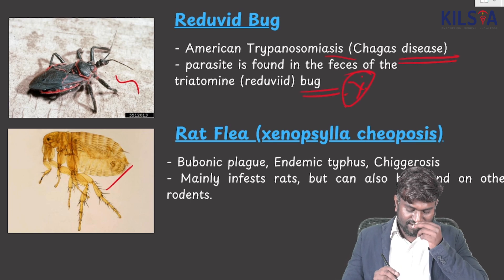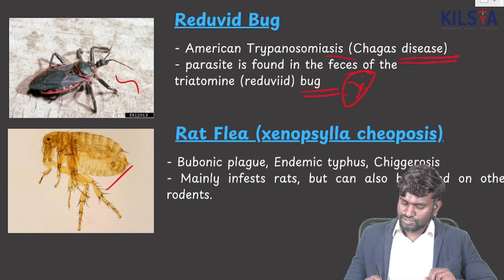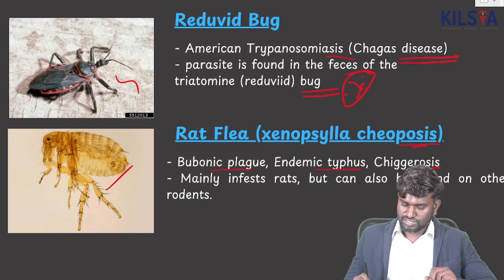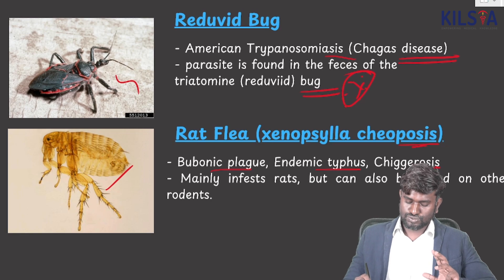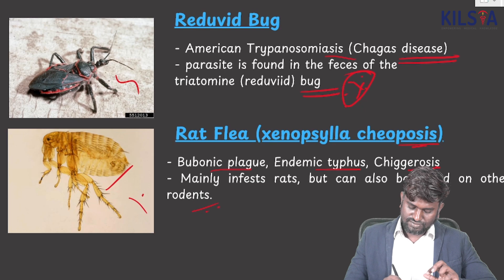This is going to be Rat Flea — which has been asked in the exam multiple times. It is called Xenopsylla cheopis. It causes Bubonic Plague, Endemic Typhus, and Hymenolepiasis. It mainly infests rats but can also be found in other rodents.